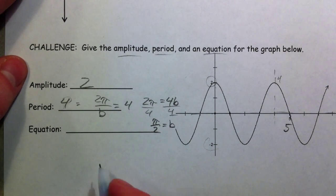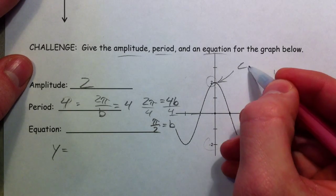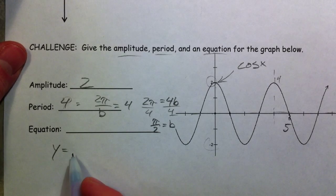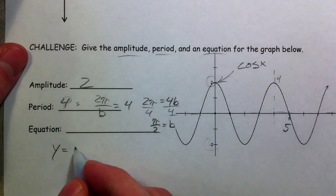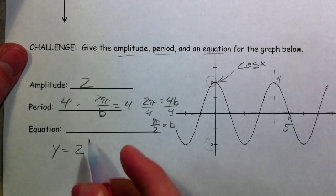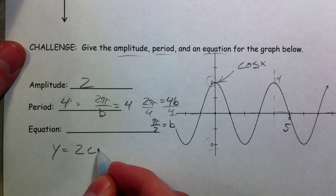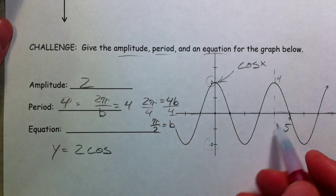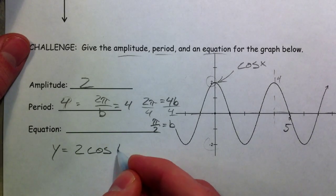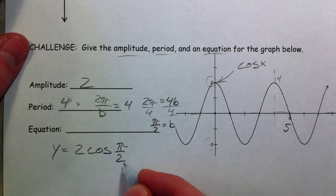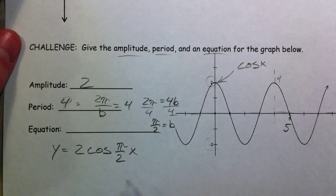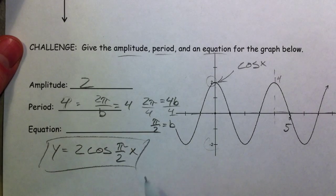And now, our equation. It starts at the peak, so it's going to be a cosine graph. And now, it's very important that you notice that the four is not going to go in front. It's the pi over two. It's the b that changes the period to become four that goes right here. Times our x. And that is our equation.